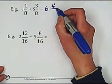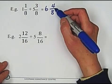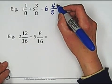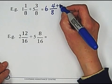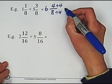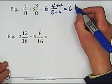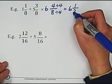Keep denominator unchanged. And the 4 over 8, we can simplify by dividing 4 to the top and the bottom. We got 6 and 1 over 2. Okay, done.